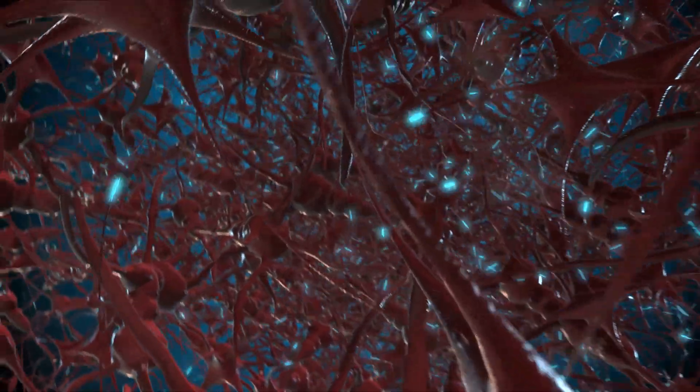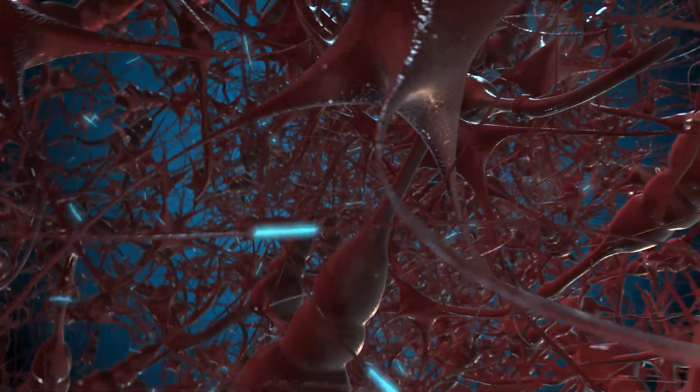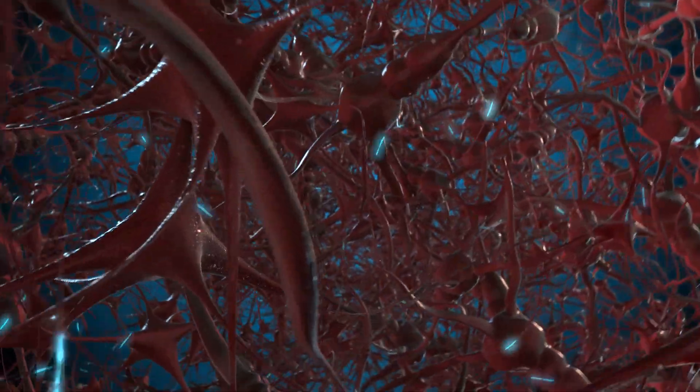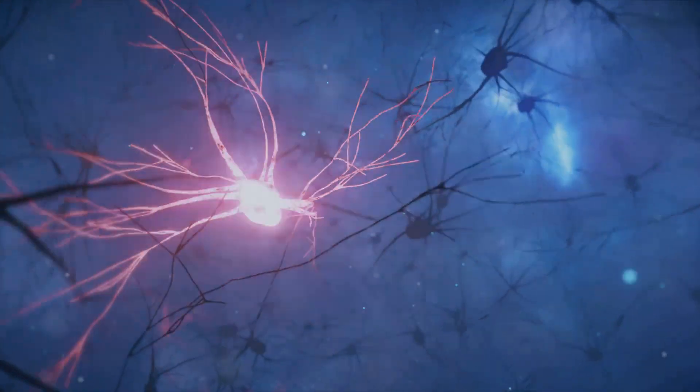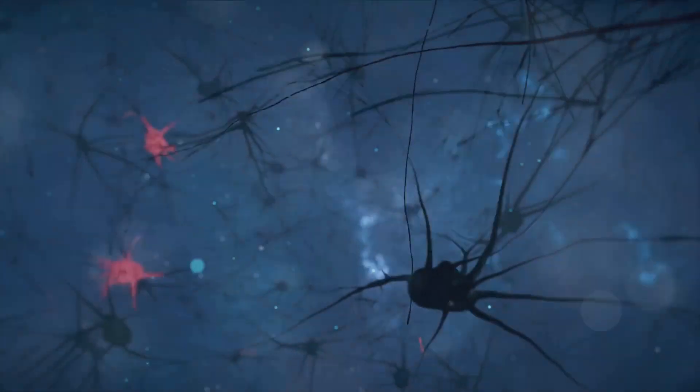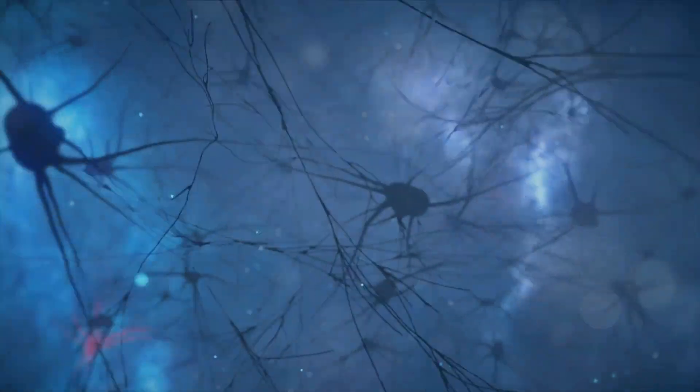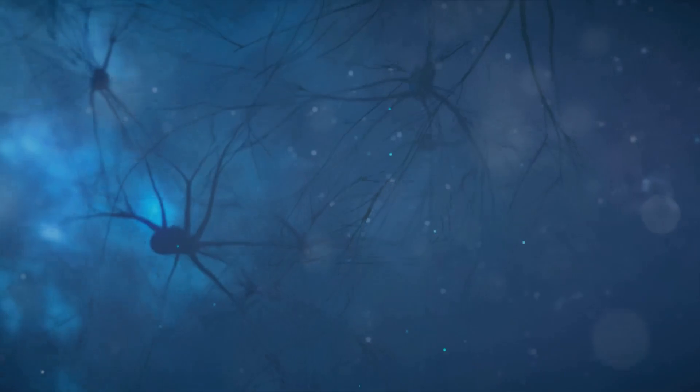The brain, weighing a mere three pounds, is an intricate network of approximately 100 billion neurons, each connected to thousands of others. This vast network allows for the rapid transmission of information, facilitating everything from the blink of an eye to the recollection of a decades-old memory. Yet, despite its complexity, the brain is incredibly efficient, requiring less power than a dim light bulb to function.